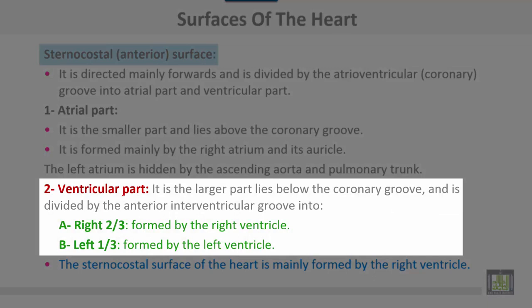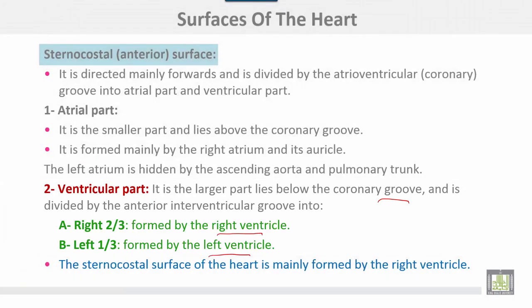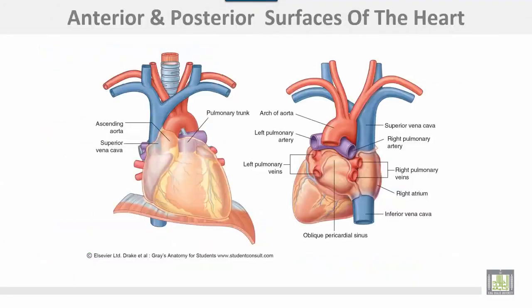The ventricular part is a larger part, lies below the coronary groove, and is divided by the anterior interventricular groove into right two-thirds formed by the right ventricle and left one-third by the left ventricle. The sternocostal surface of the heart is mainly formed by the right ventricle.